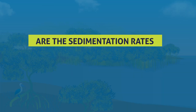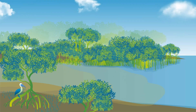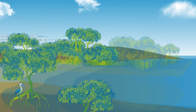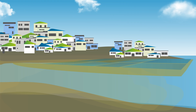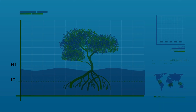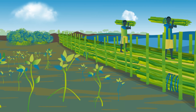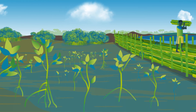Are the sedimentation rates appropriate for mangroves to grow? Most mangroves rely on fresh sediment input from rivers and tidal action. If this is disturbed — for example by coastal development — mangroves may die. Also, with insufficient sediments, mangroves cannot keep pace with rising sea levels and may drown.